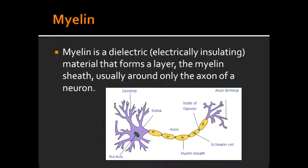To summarize, myelin wraps and insulates the axon. This helps increase the space constant and increases the conduction velocity.